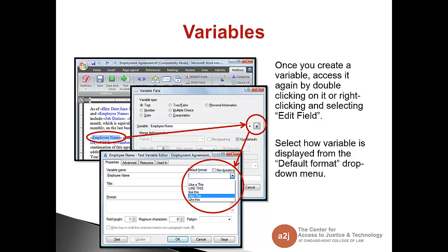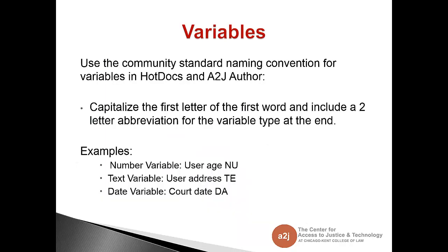You can either highlight text to turn it into a variable in an existing document or you can create a variable within a text field. For fill-in-the-blank fields you create variables within transparent text boxes so that you can place them in the proper place on the form without disrupting lines and tables. You make a text box transparent by selecting no fill and no outline under shape fill and shape outline in the format tab in Word. Once you create a variable you can access it again by double-clicking on it or right-clicking and selecting edit field. You can select how the variable is displayed from the default format drop-down menu. With all the variables that you create in this class it is important to use the community standard naming convention for variables in Hot Docs and A2J Author.